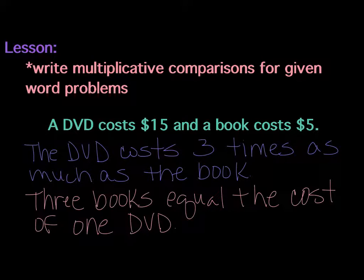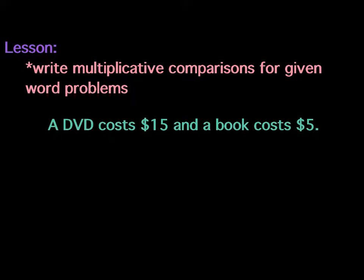Now we can use equations to show the relationships between two quantities. What equation can you write to describe the relationship between the DVD and the book? So think about a specific equation. I came up with 5 times 3 equals 15, or 15 equals 5 times 3.